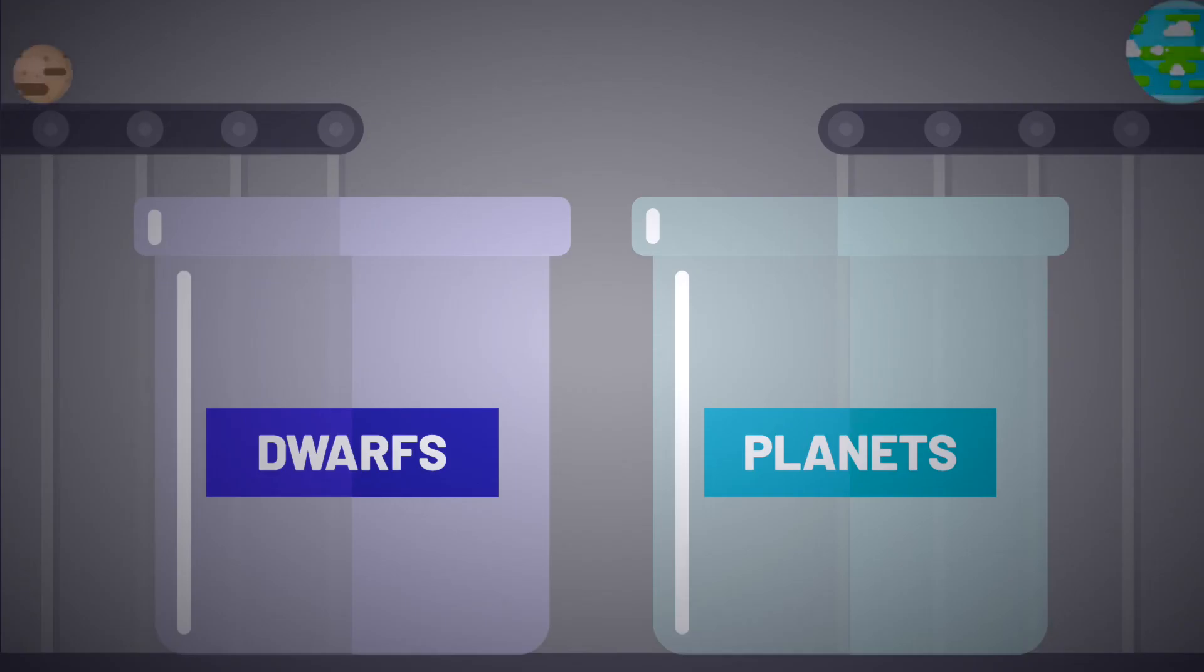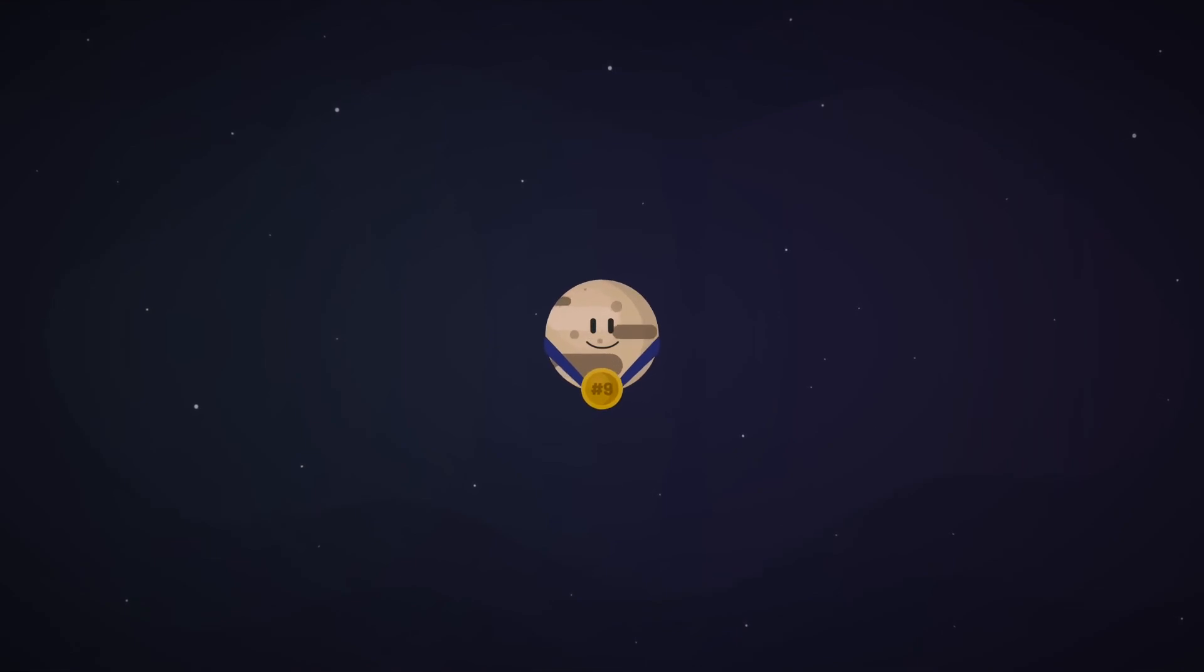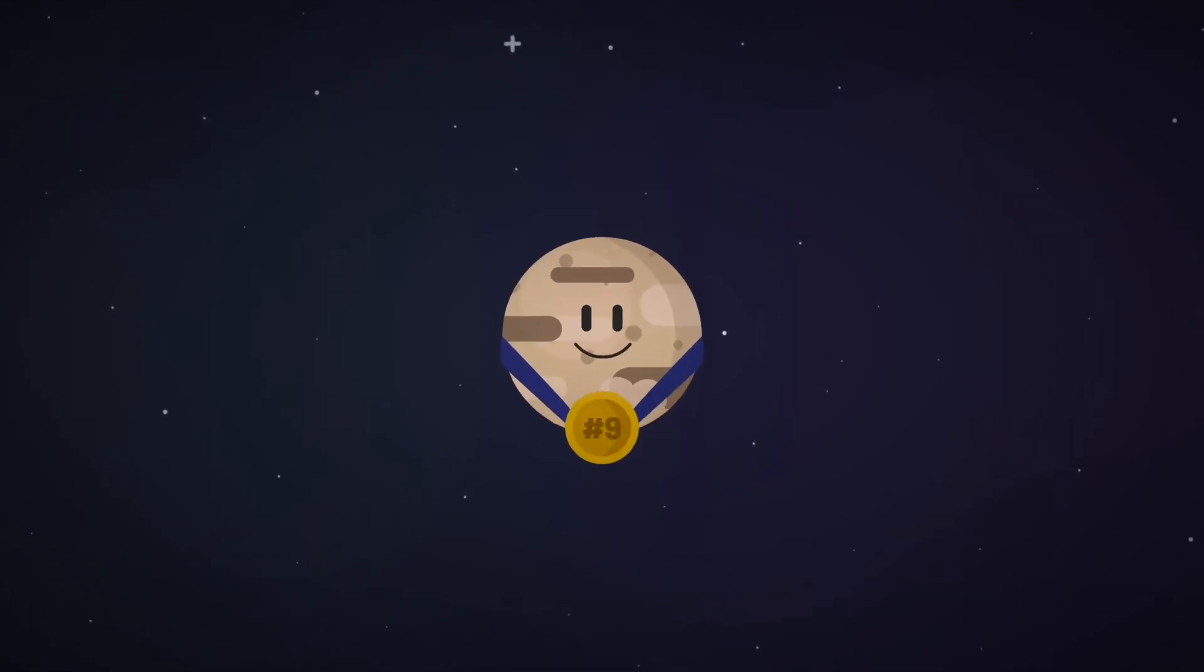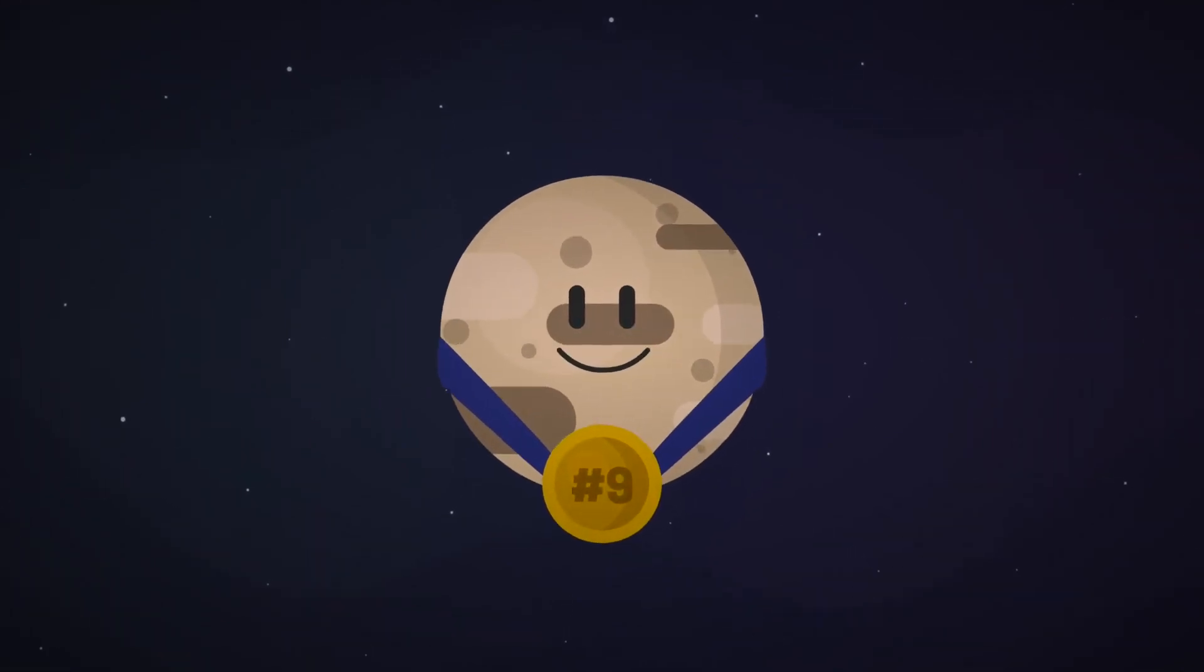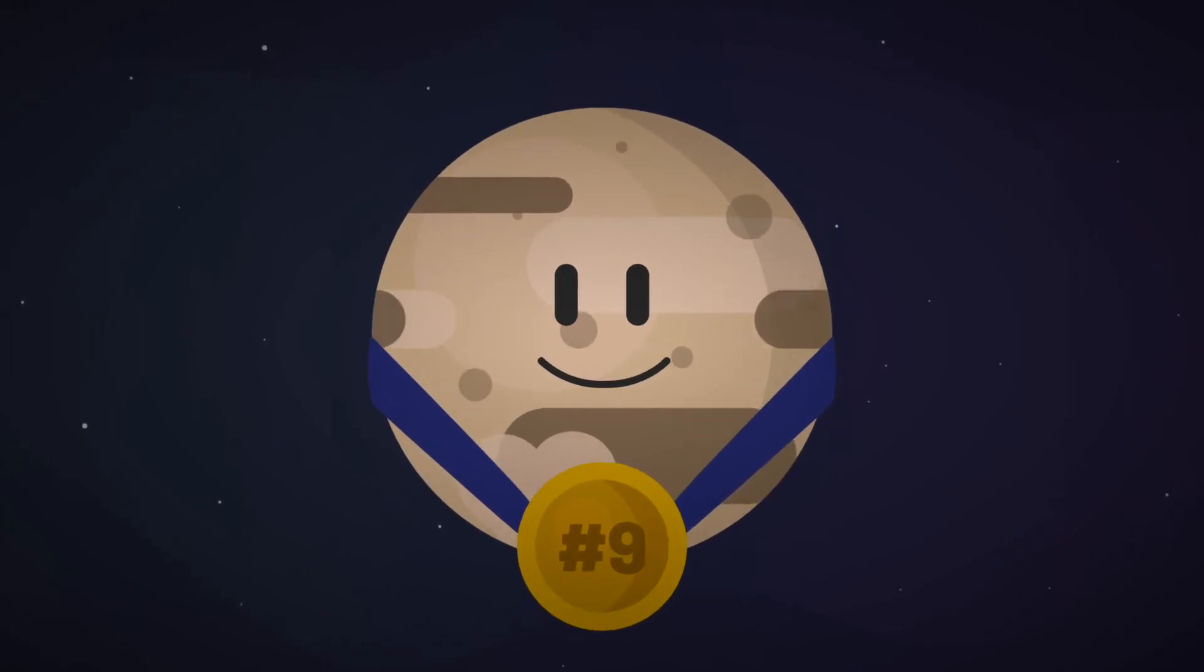So Pluto and five other planets unable to meet the IAU's three rules are classified as dwarf planets. Nevertheless, for many of us, Pluto will always be our solar system's one and only ninth planet. RIP Pluto.